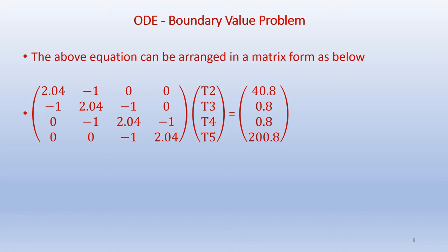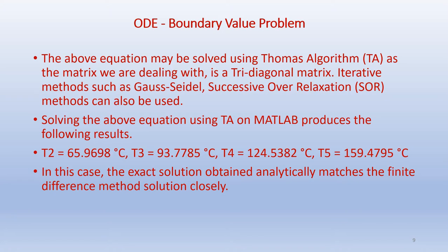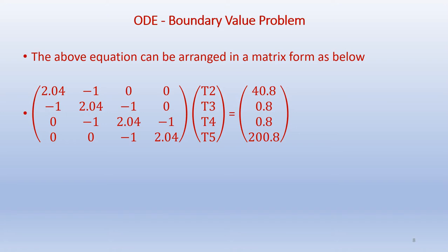The equations are arranged in matrix form. They can be solved using algorithms such as the Thomas algorithm, since the matrix is a tri-diagonal matrix. We can also use iterative methods such as Gauss-Seidel or successive over-relaxation (SOR). A tri-diagonal matrix has non-zero values along the main diagonal and on either side of it, with zeros everywhere else.